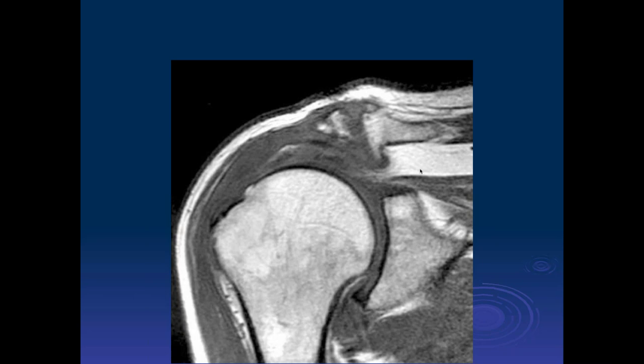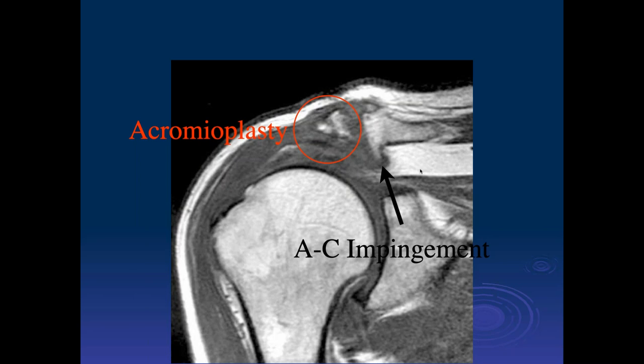Another case status post acromioplasty: the acromion looks diminutive, possibly with a small fragment lateral to it, but there is also significant undersurface spurring of the distal clavicle. Looking at how little acromion remains, this appears to be a case of over-resection.